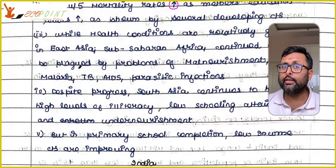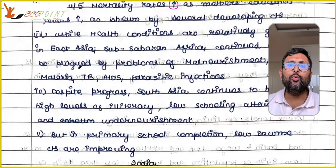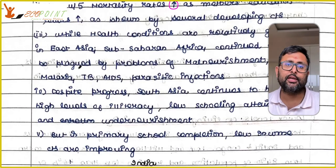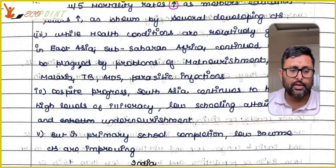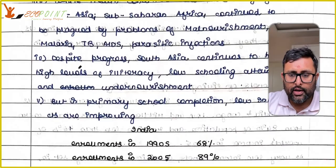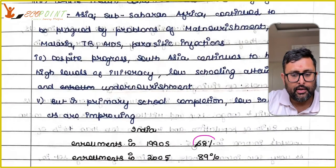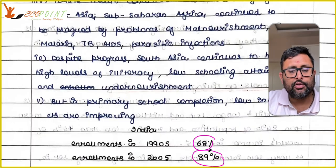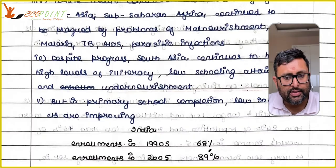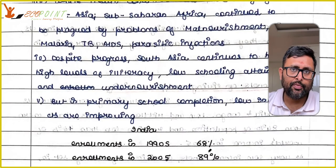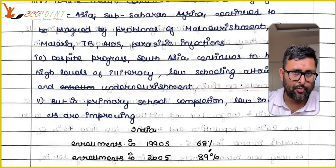These points are telling us that the developing world is not homogeneous — it is heterogeneous. Not all countries will have the same characteristics; even within developing countries there are a lot of differences. In low-income countries, primary school completion is increasing. For example, enrollments in India in the 1990s were 68%, and in 2005 they increased to 89%, showing that enrollments and completions are increasing.